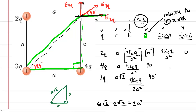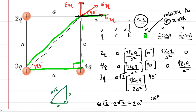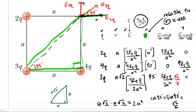For E4Q, the angle is 90°. The cosine of 90° is 0, so the x component is 0. The sine of 90° is 1, so the y component is 4kEQ / A². For E3Q, cosine and sine of 45° are both equal to √2/2. So the x component is (3kEQ / 2A²) × (√2/2), and the y component is the same as the x component.